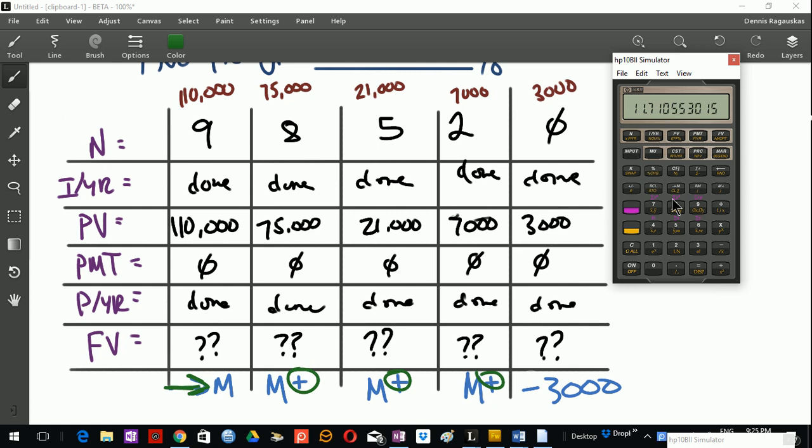Okay, so then I'll enter in 8N. And all I have to do is update my PV to 75,000. So this is the second draw, $75,000 PV. Press future value. I get negative $81,059. So I'll add that to my running total here. This time I'm going to press M plus, M plus. There we go.